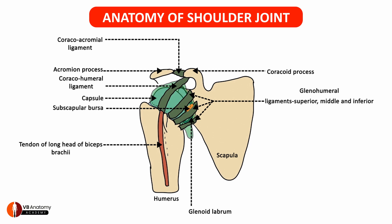The synovial membrane also emerges out in the region of the bicipital groove to enclose the tendon of biceps brachii, allowing it to pass smoothly through the bicipital groove. Holding the two downwards against the bone is the small but powerful transverse humeral ligament that holds these structures in place.